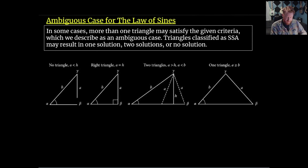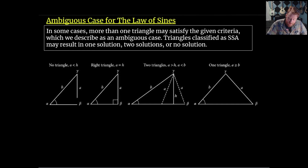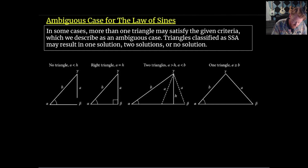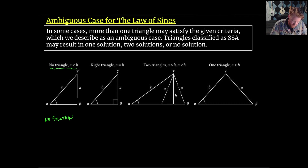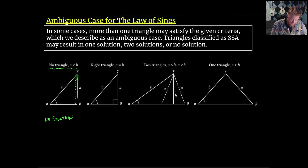There is an ambiguous case we need to think about. In some cases, more than one triangle may satisfy the given criteria. Triangles classified as SSA — where we know two sides and one angle that is not between them — may result in one solution, two solutions, or no solutions.